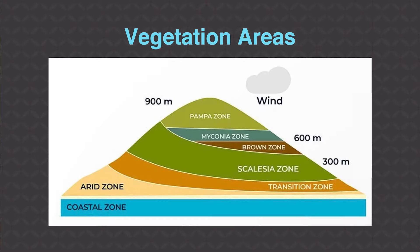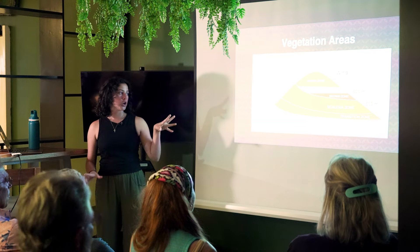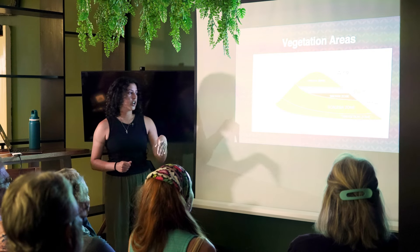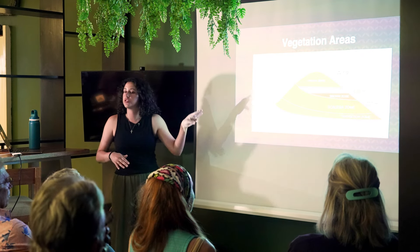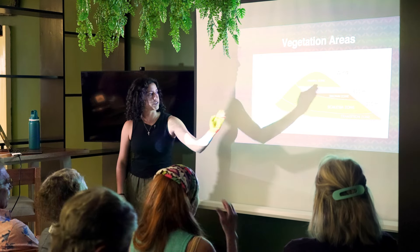The Galapagos has very unique ecosystems. There is a rain shadow — because of the way the islands are positioned, there is a rain shadow on the southern side. When the wind blows and rain comes down on that side, we see a larger area in the arid zone, the transition zone, and the Scalesia zone. This rain shadow causes those zones to encompass a larger area, with more moisture on the other side.